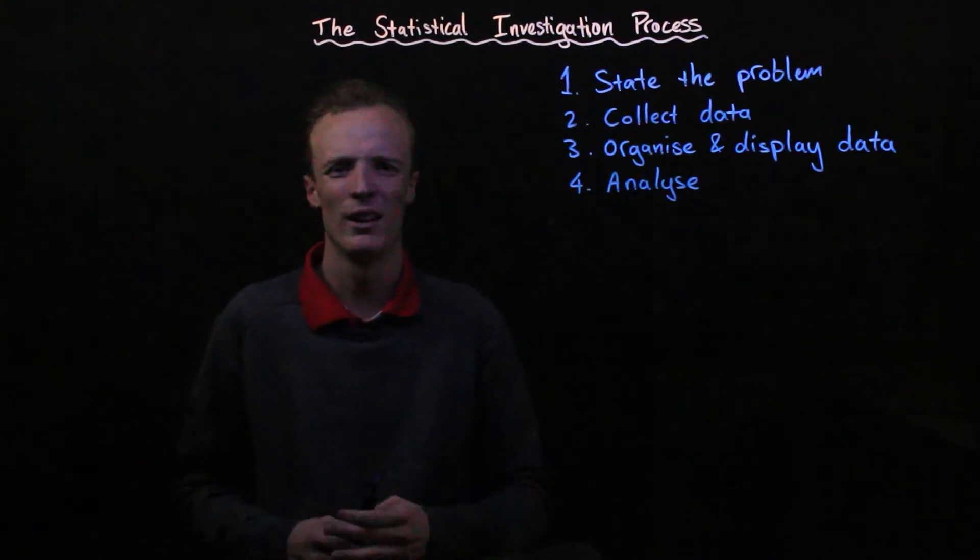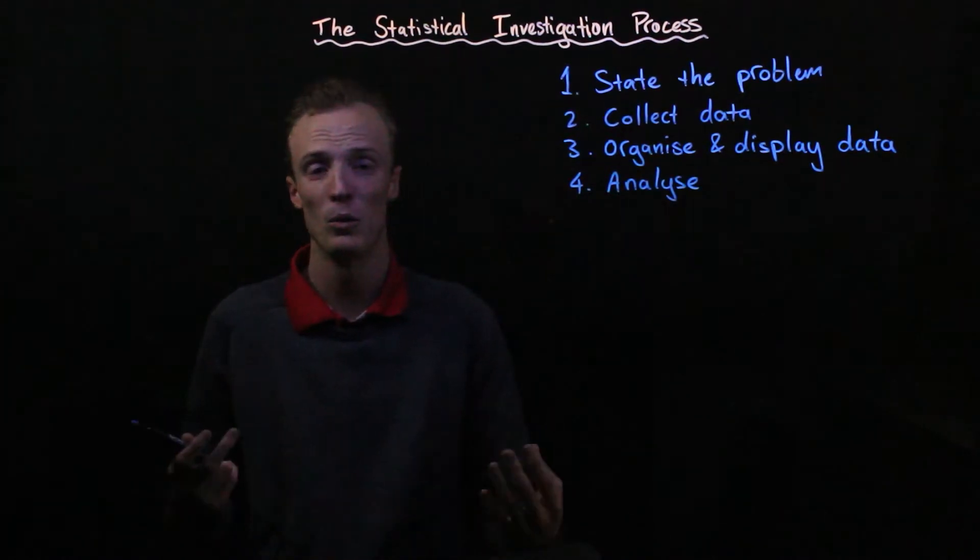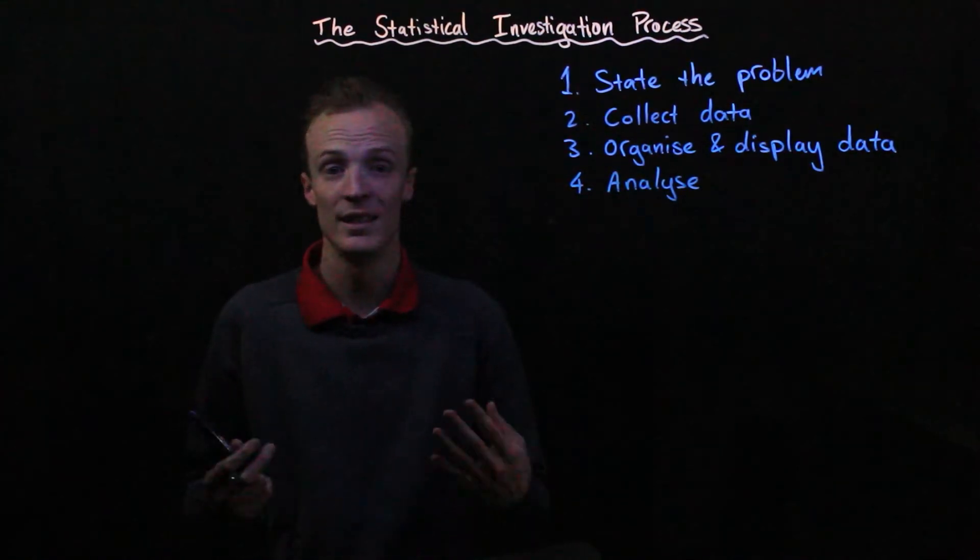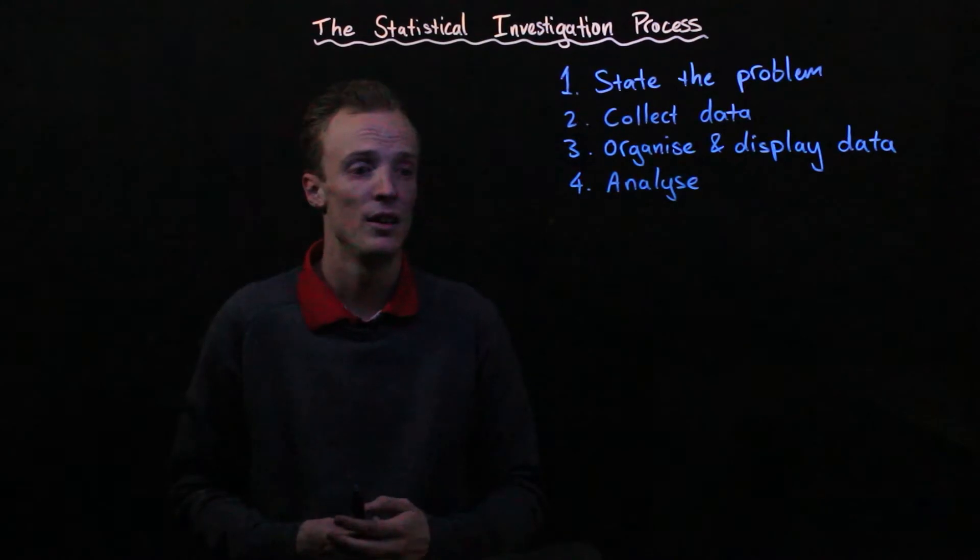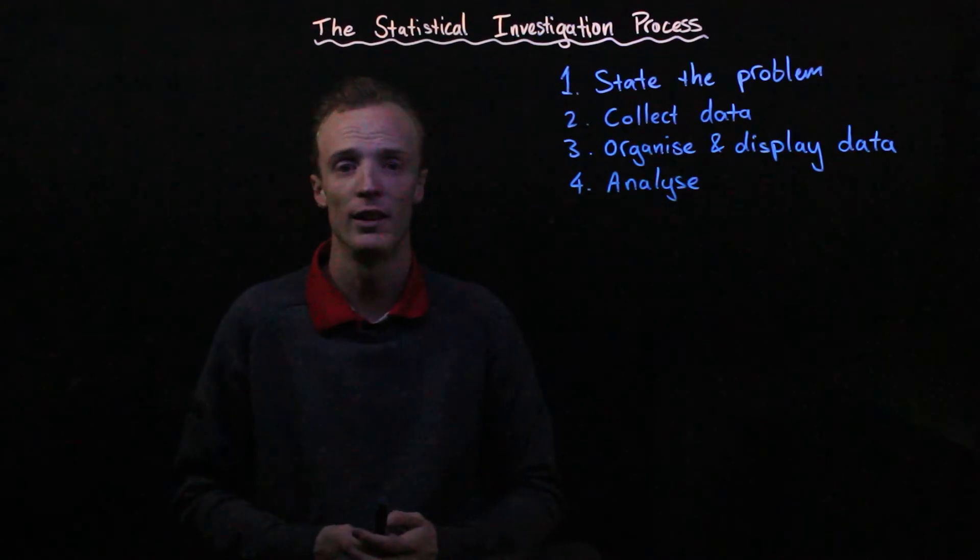But common ways to analyze it might be looking at means, median, modes, range of data, interquartile range of data, your standard deviation of data, whether there's a strong correlation to something, what type of correlation it is, what direction of correlation it is.